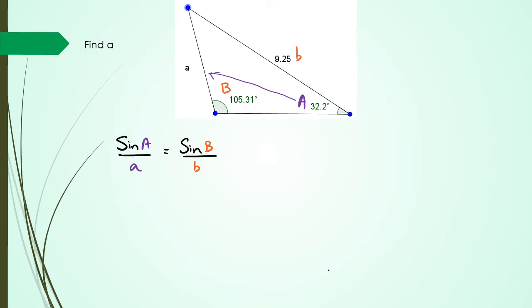Okay this is my equation but in this case I'm actually trying to figure out what A is. So just to avoid an extra step of rearranging I'm actually going to write my equation like this: A over sine A equals B over sine B.